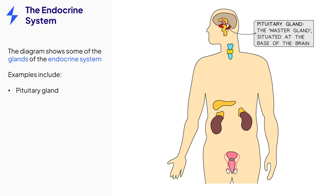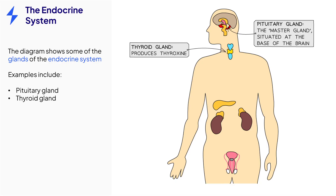The pituitary gland is positioned just below the brain, and an example of a hormone it secretes is ADH. The thyroid gland in the throat secretes many hormones, an example of which is thyroxin, which helps to control the rate of metabolism in the body.